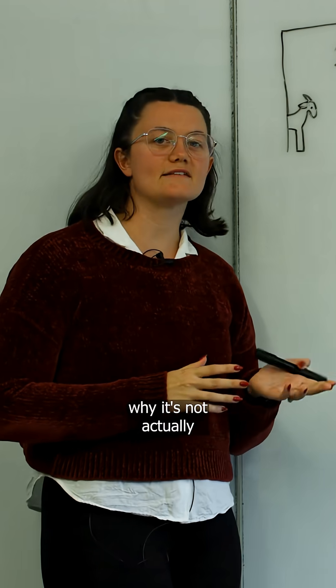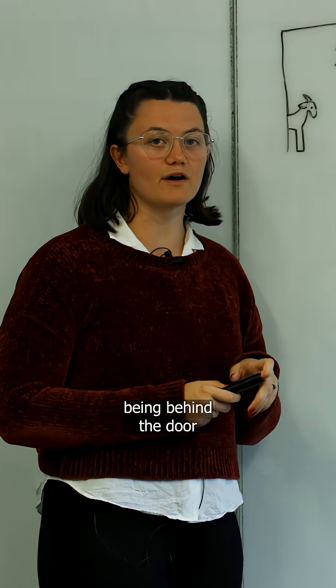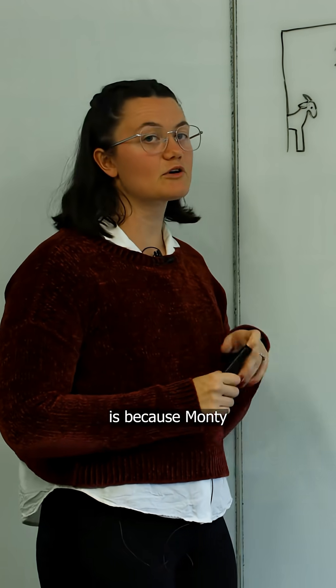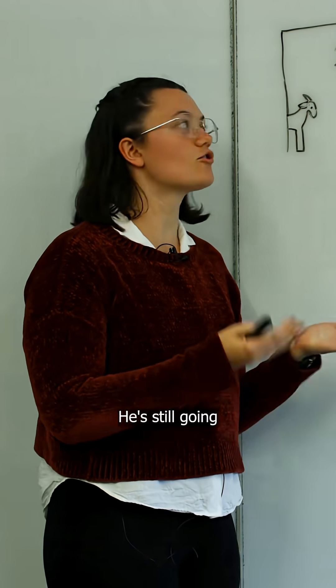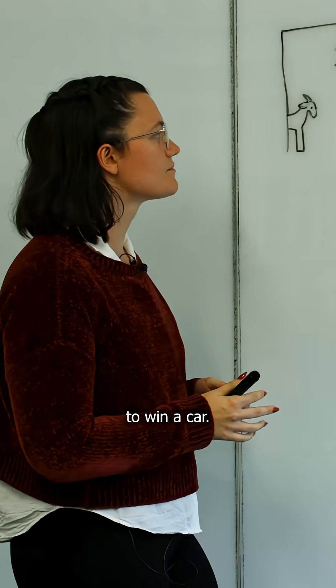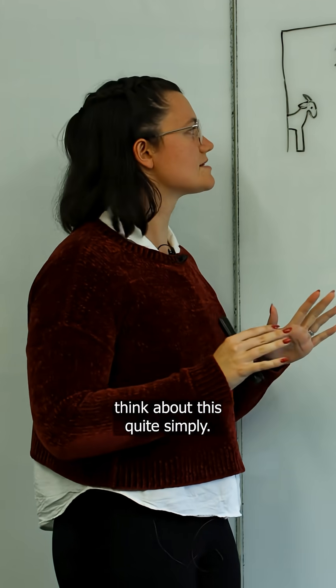The reason why it's not actually a 50-50 chance of the car being behind the door you originally picked is because Monty Hall is always going to open a door that has a goat behind it. He's still got to give you the opportunity to win a car. So let's just think about this quite simply.